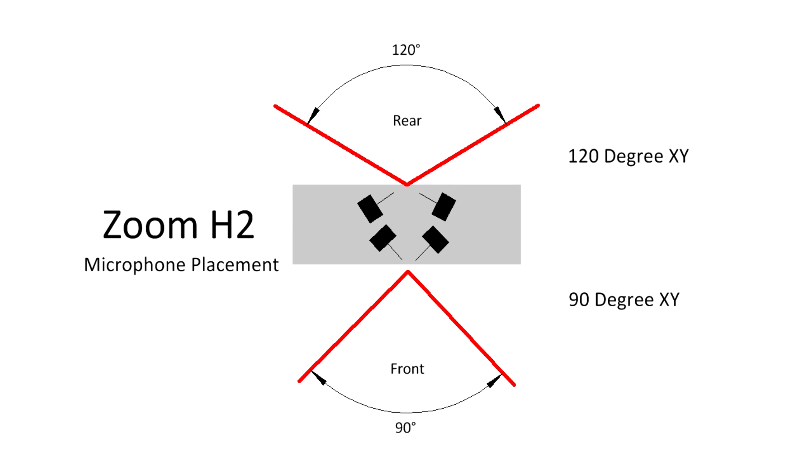This is called recording in phase with each other. The Zoom H2 has two pairs of condenser microphones arranged in two XY patterns.